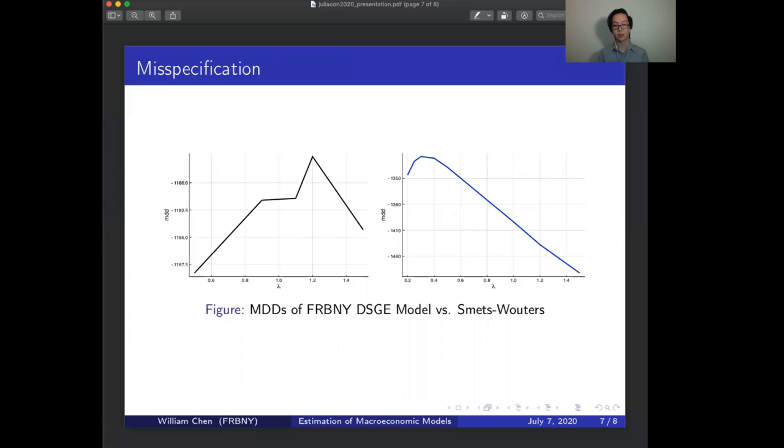Finally from the y-axis you can also see that just the MDD of the FRBNY model is much higher than the Smets-Wouters model. Therefore based on the marginal data density and lambda, the FRBNY model can be determined to be better at explaining the macro data that we're estimating the models on than the Smets-Wouters model.